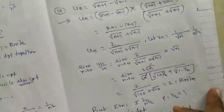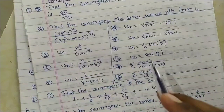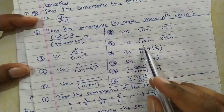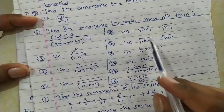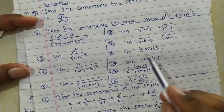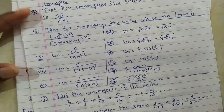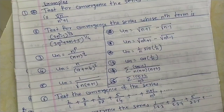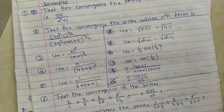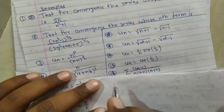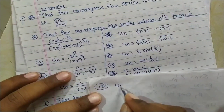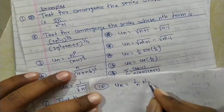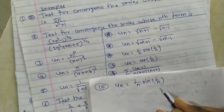Problem 11: un = √(n⁴+1) − √(n⁴−1). This is the same type — apply rationalization. Problem 12: un = (1/n)·sin(1/n). Here 1/n is inside the angle, so we cannot write vn directly. We must use the standard expansion of sin x.